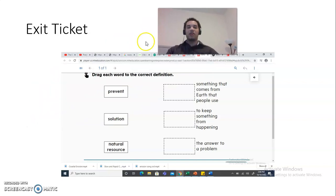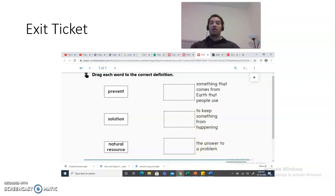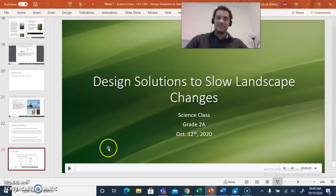All right, and we got one more. All right, so this one says prevent, solution, and natural resource. So you need to tell me which one of these words matches in the box. So you can put a line or you can just write the word in the box so I know. So this one says something that comes from earth that people use, to keep something from happening, the answer to a problem. All right, so tell me which one fits the word. And that is all for now. Okay, bye, everybody. And I hope you guys would do the Seesaw work. And I will see you next week. Bye.